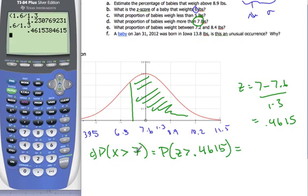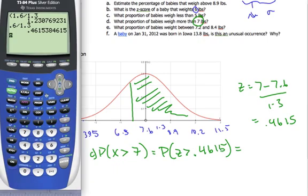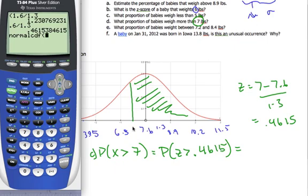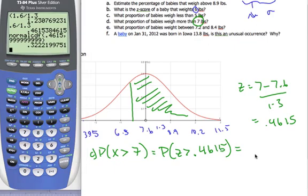And if I go to my calculator, I can go now 2nd distributions, normal CDF. And I'm going to put my left-hand bound first, which is going to be 0.4615, comma, off to infinity, a big number. So, throw a bunch of 9s down there. And I get a probability of 0.322. So, the proportion of babies weighing more than 7 pounds, it's 30.